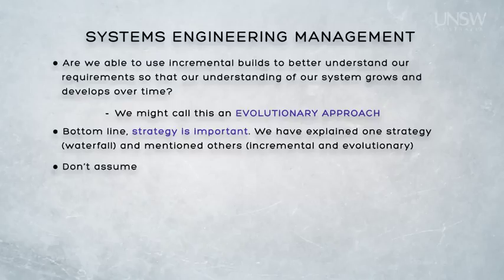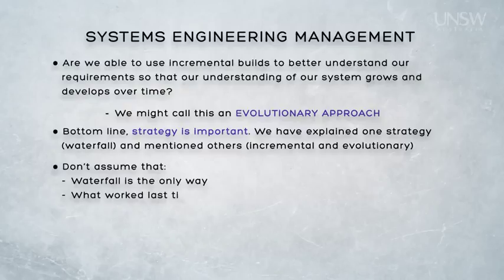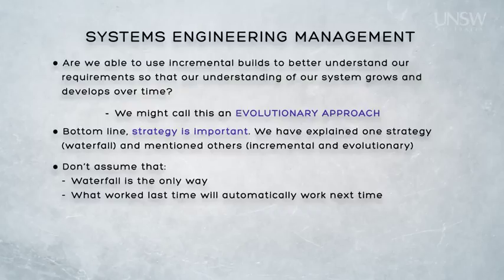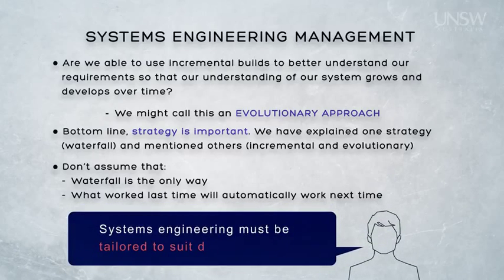The bottom line is that there are many ways to execute systems engineering. We've discussed the waterfall approach in this course, and we've also touched on alternatives like the incremental and evolutionary approach. When people say that systems engineering has not worked on their project, they are probably saying that an inappropriate systems engineering approach was employed. Systems engineering is not a one-size-fits-all process — what works in one situation probably won't work so well in other situations. There is no such thing as a perfect systems engineering process; systems engineering must be tailored to suit each unique situation.